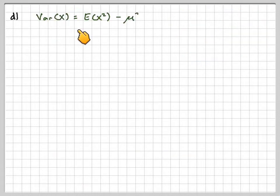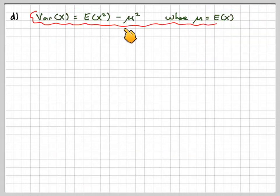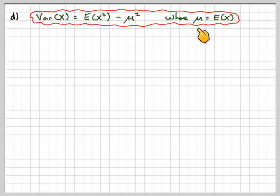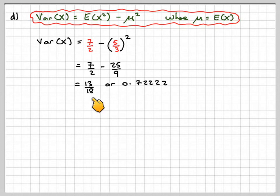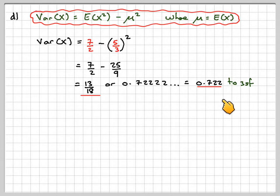Having done that, the next part is quite easy. The variance of x is E of x squared minus the mean squared, where the mean is E of x. This is the answer of part b, and this is the answer of part c. So we need 7 over 2 minus 5 thirds squared, that's 7 over 2 minus 25 over 9, which gives me 13 over 18, or 0.722 to three significant figures.